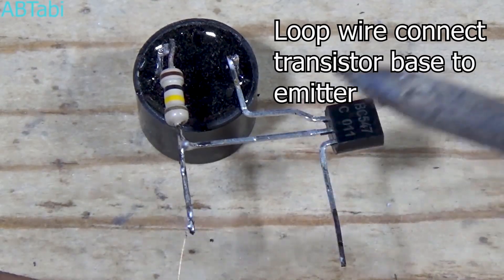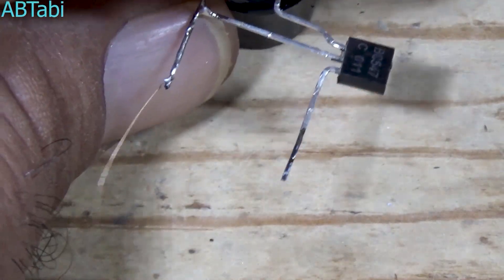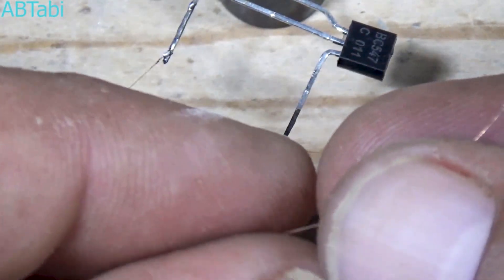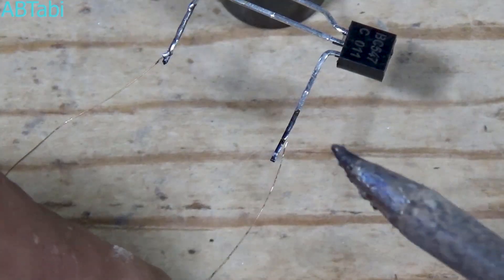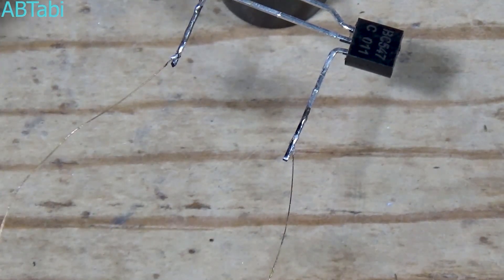Now let's understand how this circuit works. As long as the thin wire loop is connected, the transistor remains off and the buzzer does not sound. But as soon as the wire breaks, the base of the transistor gets activated. This turns the transistor on, and the buzzer starts sounding continuously. This is the real logic behind the loop break security system.